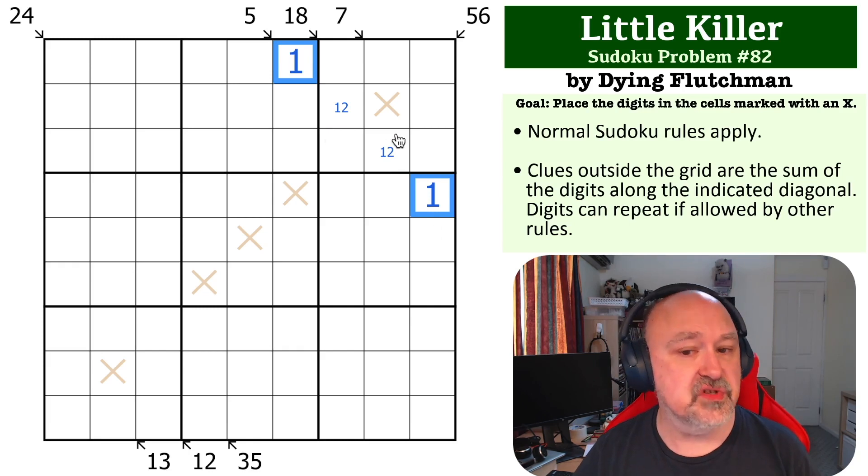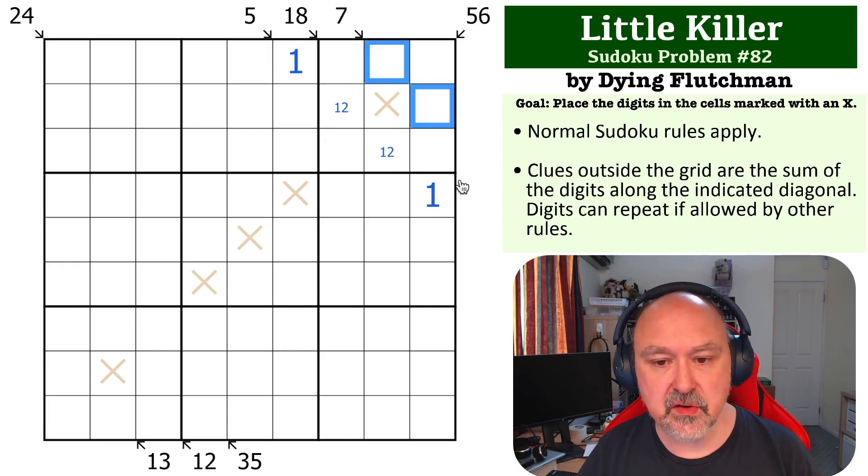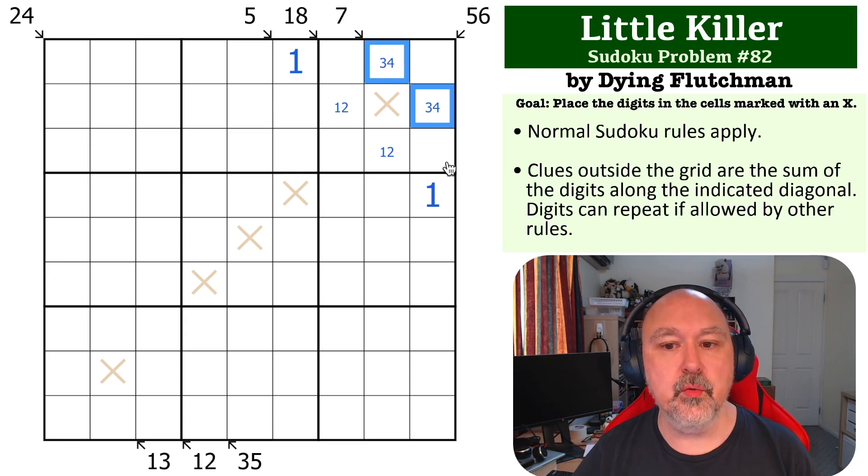Now we don't need those for the solution, but they are worth noting. Now we look at this 7 clue. We don't have 1 and 2 available, but we still need to make 7. The minimum digits we have available are 3 and 4, which makes up the 7.